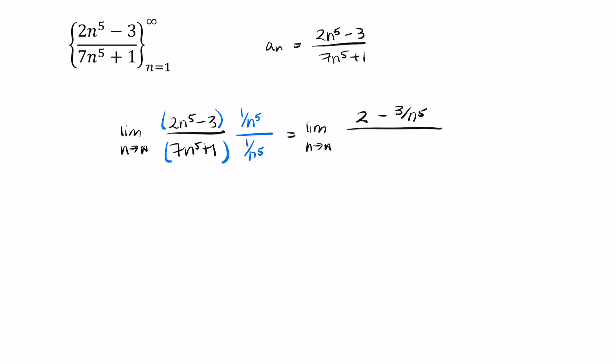Pause your video and try the same thing in the denominator. You should have gotten 7 plus 1 over n to the fifth.